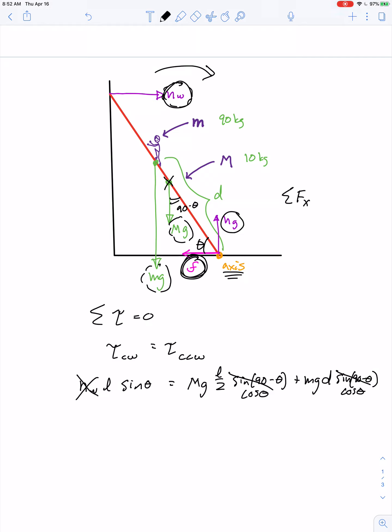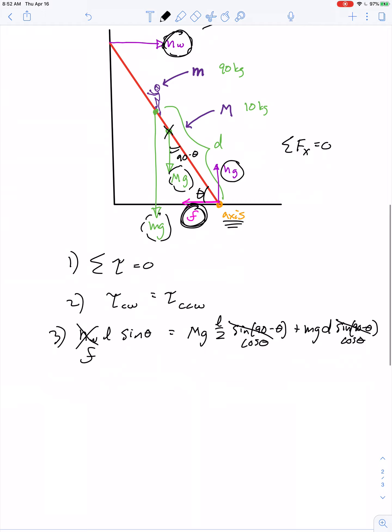We'll cross out normal force of the wall and replace it with friction force, because after all the net force along the x-axis has to equal zero. So we've got step 1, step 2, and step 3. In step 4, we can divide both sides of the equation by cosine theta. And we can also replace friction force with μ times the normal force of the ground.